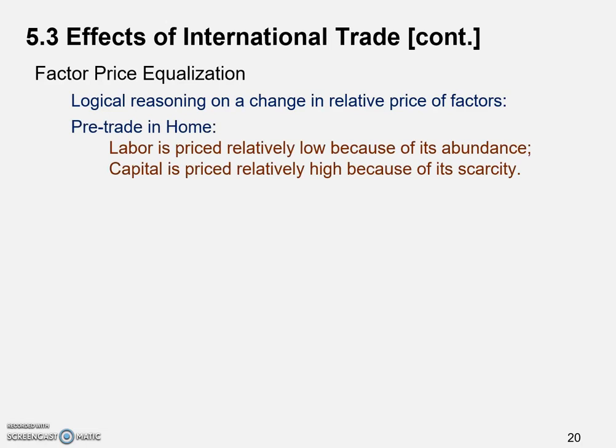First of all, let's take a look at the pre-trade situation in Home and Foreign — the two economies. Pre-trade means the two economies are isolated from each other. We still have the assumptions we made before: Home is abundant in labor, and labor is priced relatively low because of its abundance. Capital is priced high because of its scarcity.